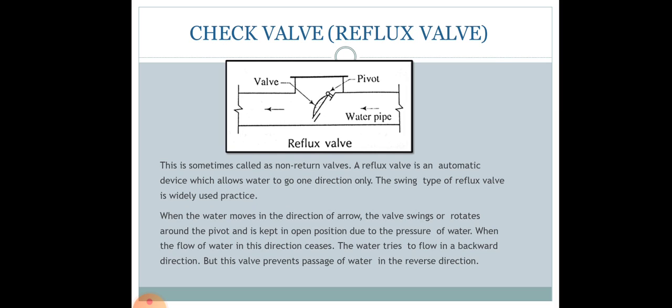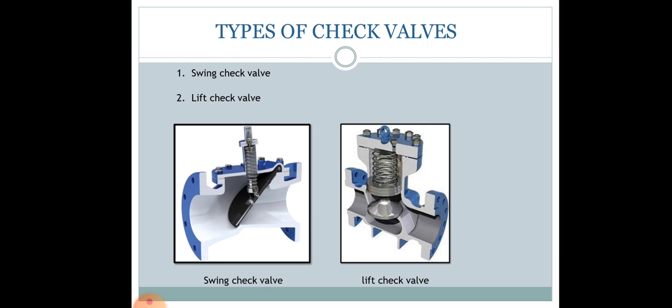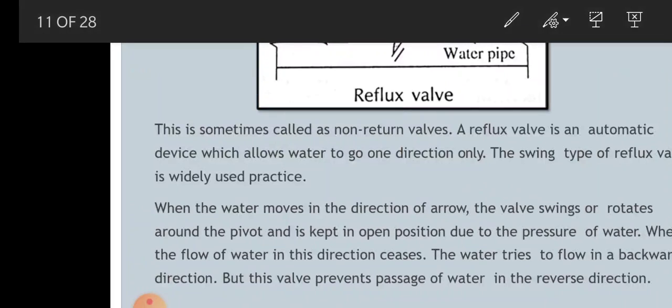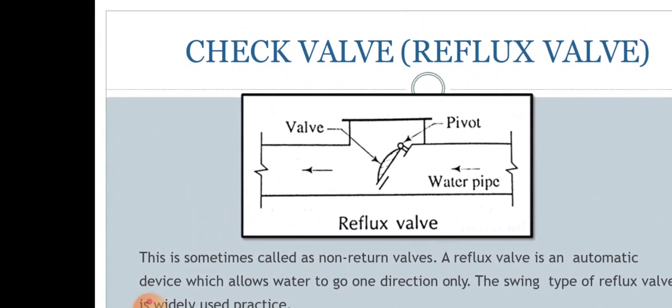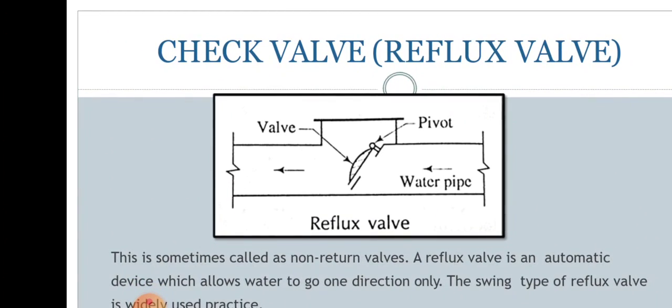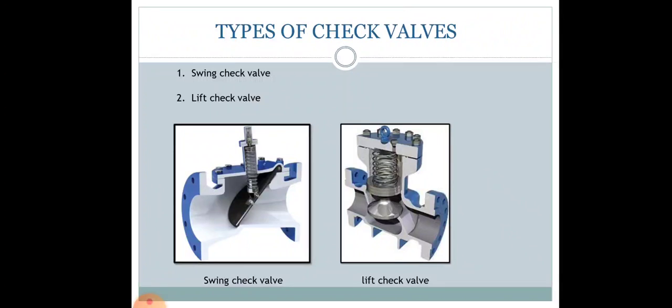The check valve, also called the non-return valve or reflex valve, comes in two types: the swing check valve and the lift check valve. It is an automatic device which allows water to go only in one direction, and the swing type is widely used in practice. When water moves in the direction of the arrow, the valve swings or rotates around a pivot and is kept in open position due to the pressure of water. When the flow of water ceases, water tries to flow backward, and the valve prevents passage of water in the reverse direction.